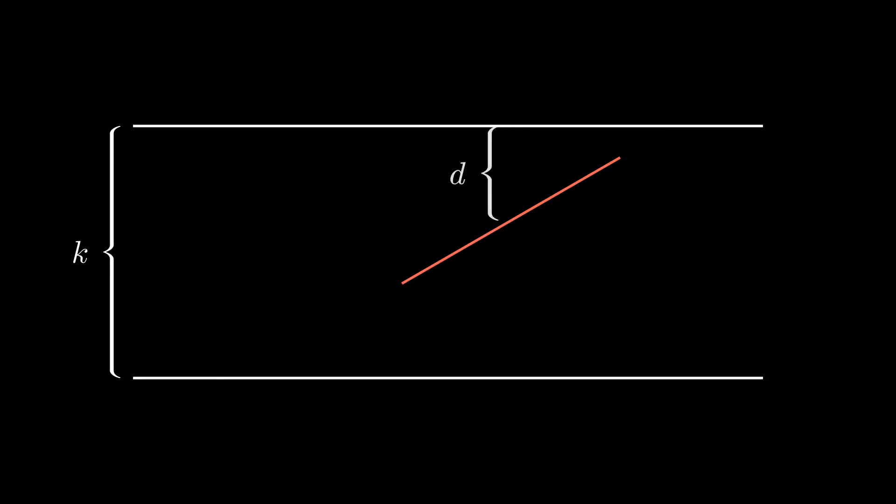Note that d cannot be greater than k over 2, since, at most, the center of the needle will be in the middle of the two lines. We'll define theta to be the angle between the needle and the horizontal. And from this, we can find the needle's vertical extent from its center to be l sin theta over 2.